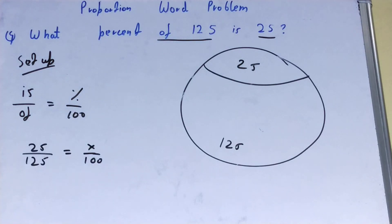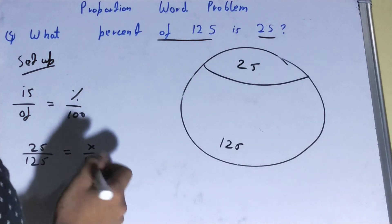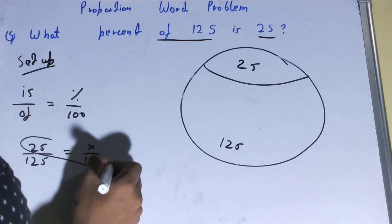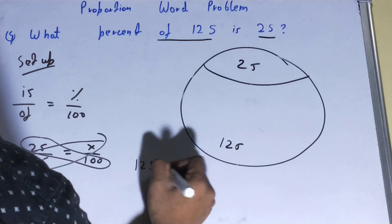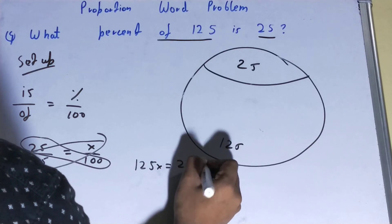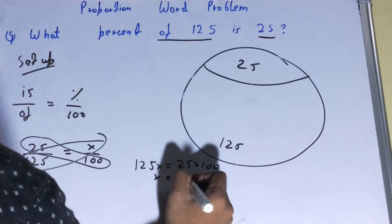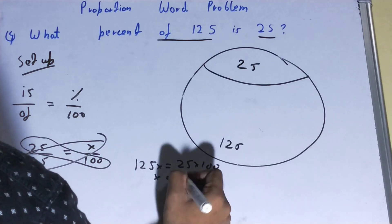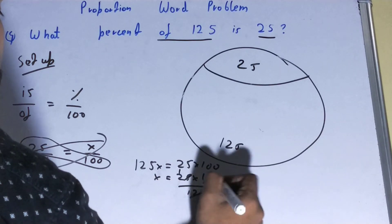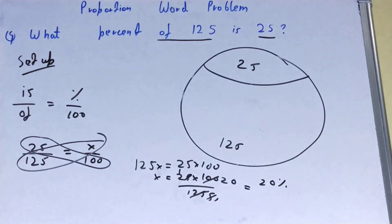For simplicity, let's cross multiply: 125x equals 25 times 100. So x equals 25 times 100 divided by 125. Working through the arithmetic: 25 ones are 25, fives are 5... you will get the answer 20 percent. This is how you can deal with proportion word problems.